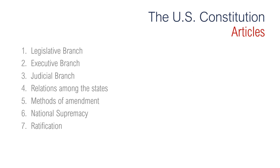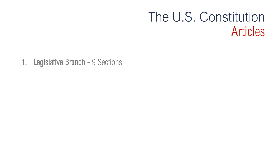There are seven articles in the Constitution following the preamble. Article 1 is by far the longest article in the Constitution. Earlier I mentioned that there are 4,543 words in the original portion of the Constitution, excluding the Bill of Rights and amendments. Article 1 is 2,266 words long, which is almost exactly half of the whole document. Why is it so long? Many people wonder why this part of the Constitution is so much more wordy than the rest of it.